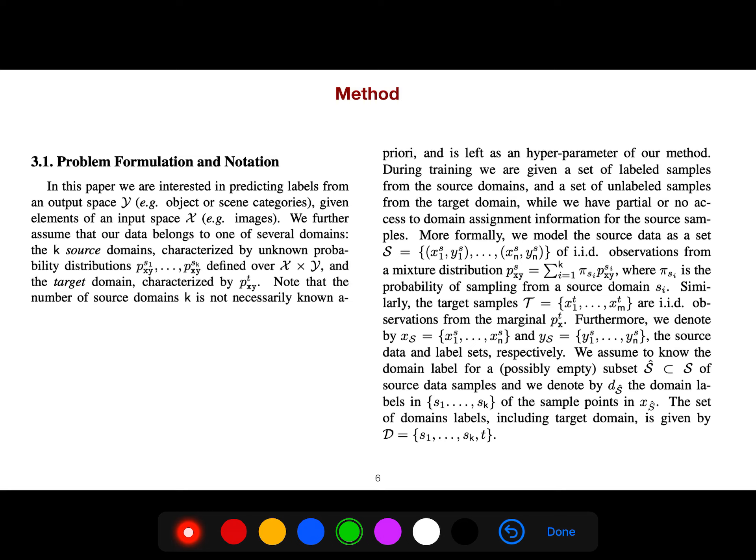So here we have k source domains and we have this target domain. We model the source data as a set of i.i.d. observations from mixture distributions, so this coefficient is just the probability of sampling from the source domain s_i. Similarly, the target is i.i.d. from the marginal distribution.